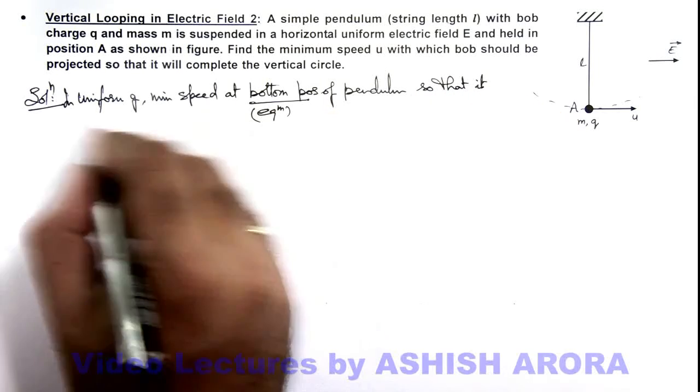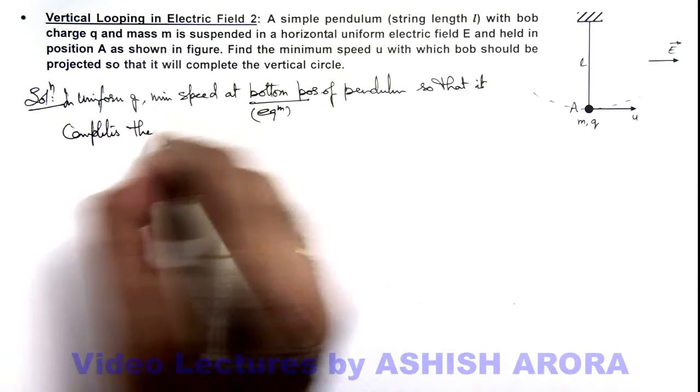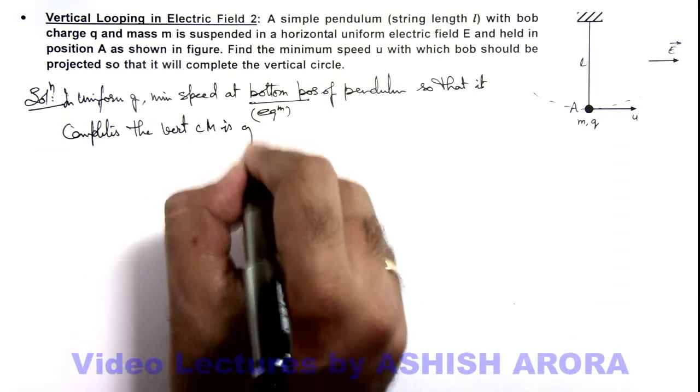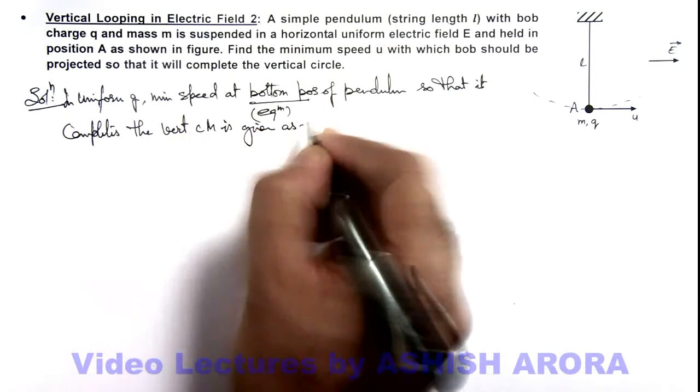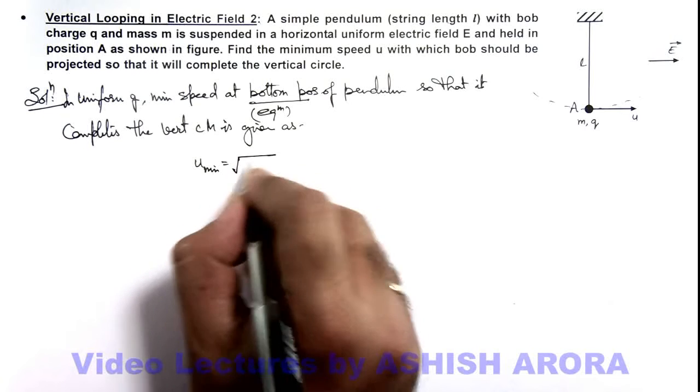Minimum speed at the equilibrium position of pendulum so that it completes the vertical circular motion is given as u minimum at the equilibrium position is root 5 g l.